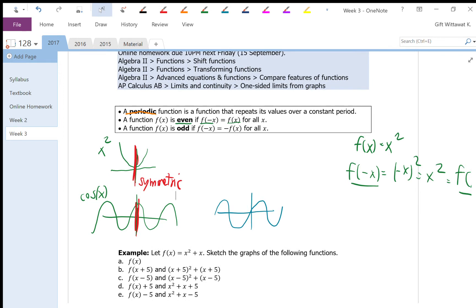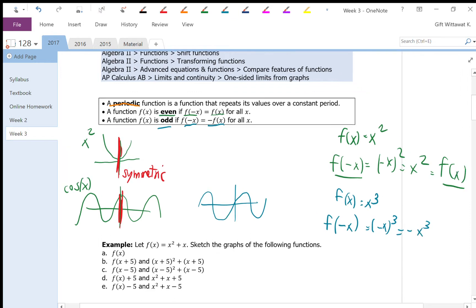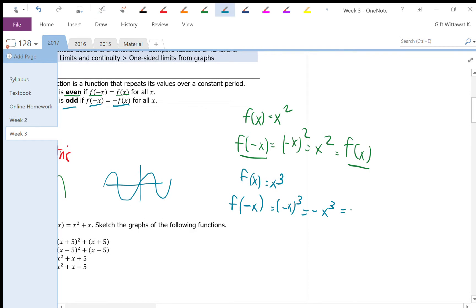The odd function is when f of negative x is equal to negative of f of x. An example is when you have f of x equals x cubed. In that case, f of negative x is going to be negative x cubed, and that's negative x cubed, which is the negative of f of x.